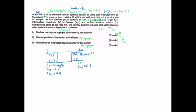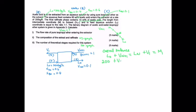Now let's do the overall mass balance. The overall balance gives: L0 plus Vn+1 equals Ln plus V1, which equals M. Substituting the known value: 200 plus Vn+1 equals Ln plus V1 equals M. This is our first equation.